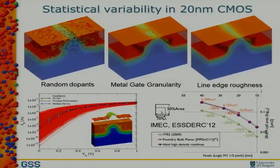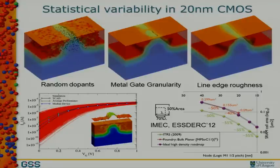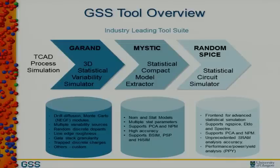Statistical variability refers to atomic-scale fluctuations in small devices. The main source in bulk is random dopants, but there are other sources like metal gate or polysilicon granularity and line edge roughness. The level of variability at 20 nanometers is very high. It creates particular problems for SRAM — it is very difficult at 20 nanometers to scale SRAM the same way you scale transistors. The predicted SRAM scaling gain may drop from 50% per generation to around 40%, mainly due to statistical variability.